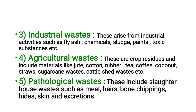The fifth category is pathological waste. This includes slaughterhouse waste such as meat, hair, bone chippings, hide, and animal excretions.